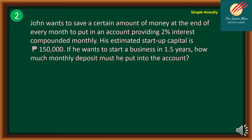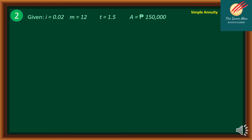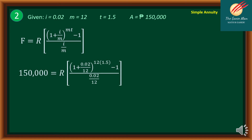Let us consider problem number 2. John wants to save a certain amount of money at the end of every month in an account providing 2% interest compounded monthly. His estimated startup capital is 100,000 pesos, and he wants to start a business in 1.5 years. How much monthly deposit must he put into the account? The given are: I = 0.02 (2%), M = 12, T = 1.5, and future value F = 100,000. We want to find the regular payment R.